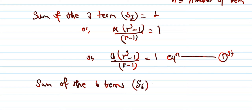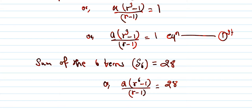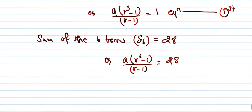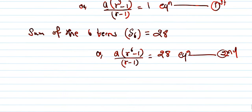From S6 = 28, we write Equation 2: a(r⁶ - 1) / (r - 1) = 28. Now we solve both equations by dividing Equation 2 by Equation 1.